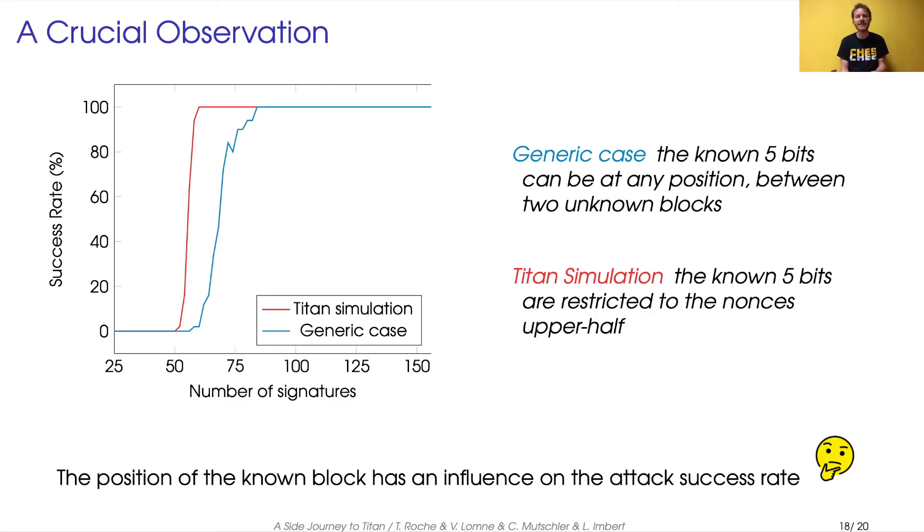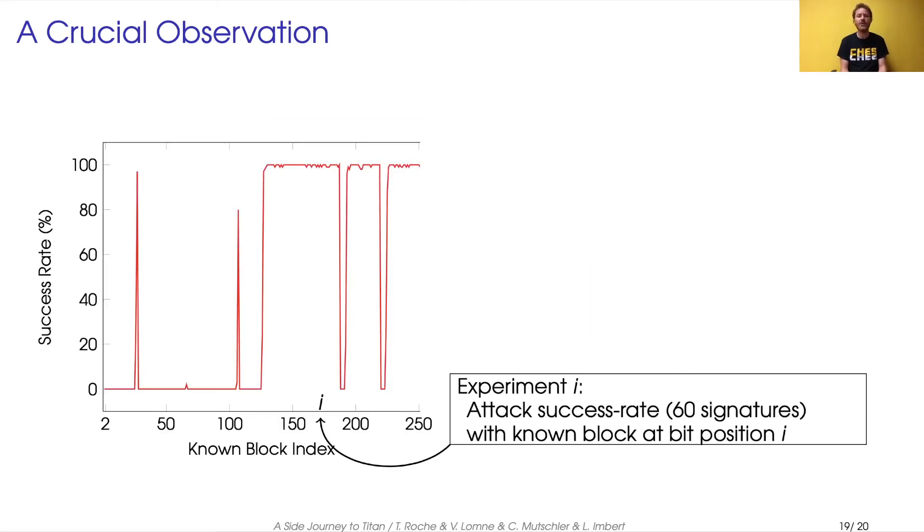So we did a further experiment where we computed the attack success rate using 60 signatures, where the known block of five consecutive bits is located at a constant position i. And we did this experiment for all possible positions. The result is plotted here.